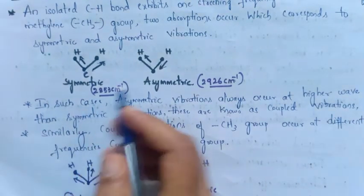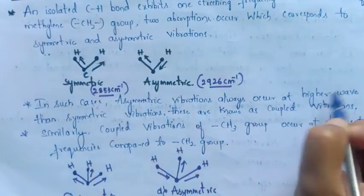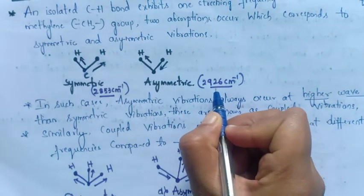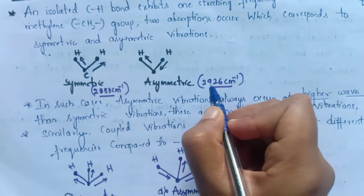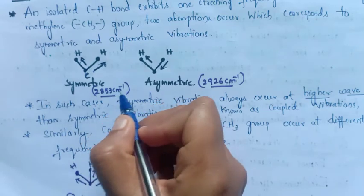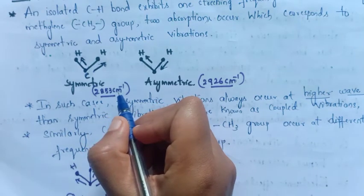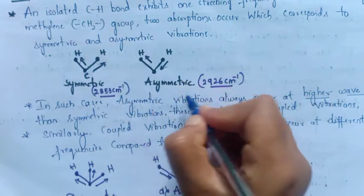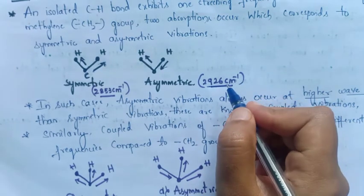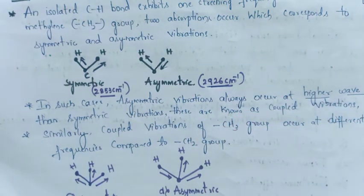In such cases, asymmetric vibrations always occur at higher wave number. For example, asymmetric stretching has a wave number of 2926 cm⁻¹ whereas symmetric stretching has 2850 cm⁻¹. As you can see, asymmetric stretching occurs at higher wave number. These are called coupled vibrations — in the same molecule there are two different vibrations, symmetric and asymmetric.